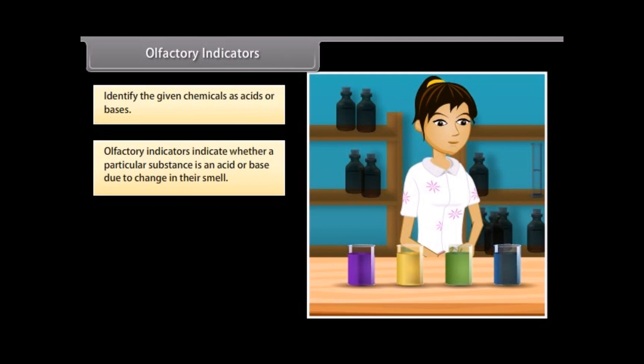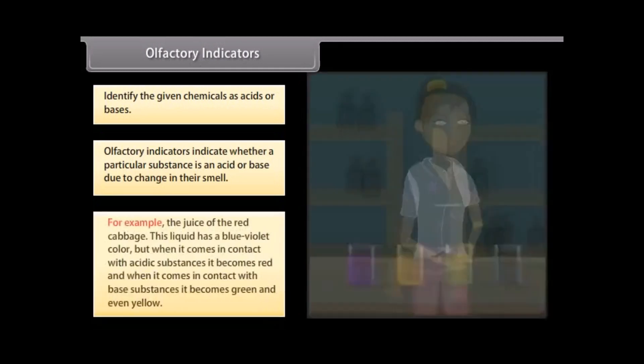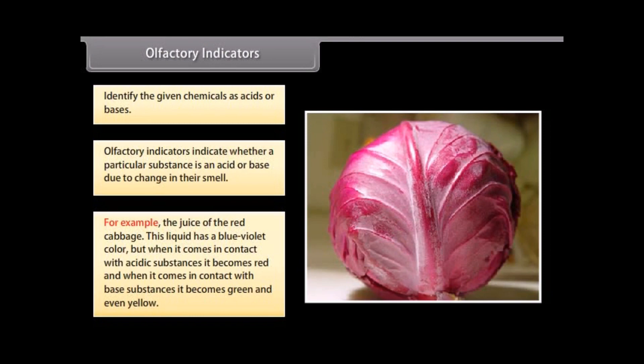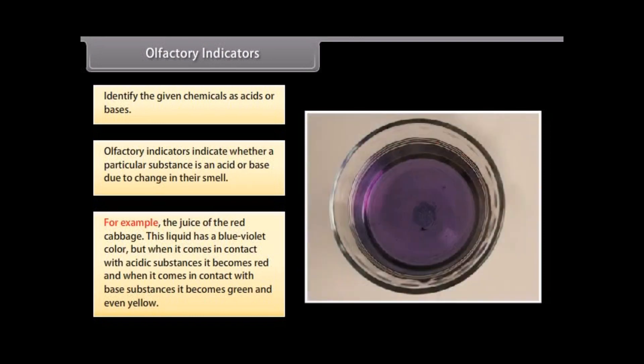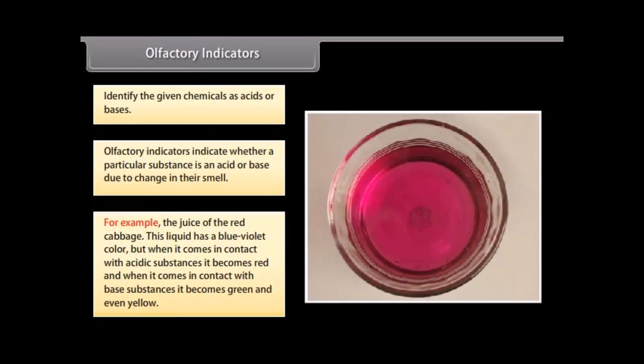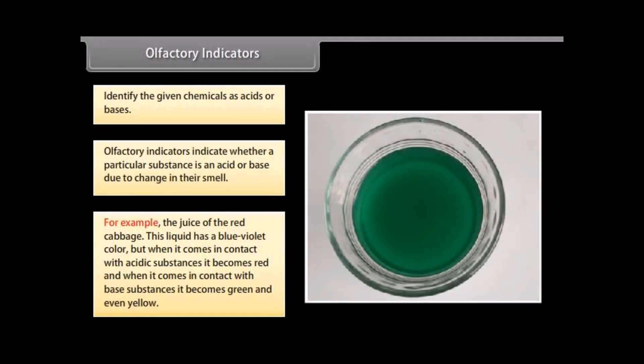An olfactory indicator works on the principle that when an acid or base is added to a substance, its odor cannot be detected. For example, the juice of the red cabbage. This liquid has a blue-violet color, but when it comes in contact with acidic substances, it becomes red, and when it comes in contact with base substances, it becomes green and even yellow.